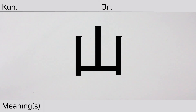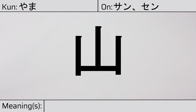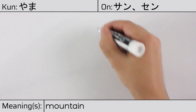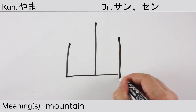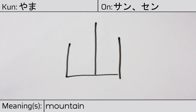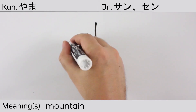Welcome to this lesson on Japanese kanji. Today, we'll be discussing this character. This kanji has a kunyomi or Japanese reading of yama, and it has onyomi or Chinese reading of san or sen. This character has the meaning mountain. Here is the stroke order. This character has no radicals, but is a radical in other composite characters.